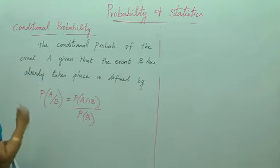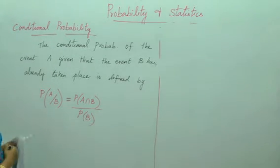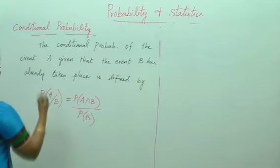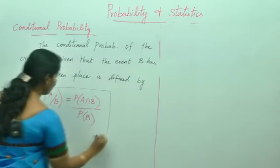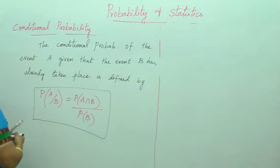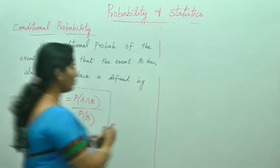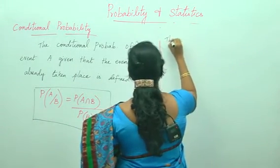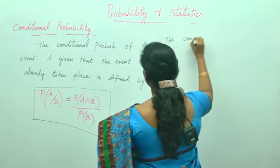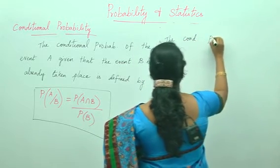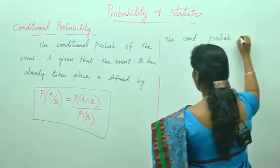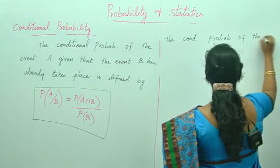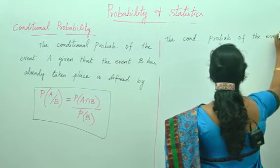So what is it? The conditional probability of the event A given that the event B has already taken place. Similarly, the conditional probability of the event B.